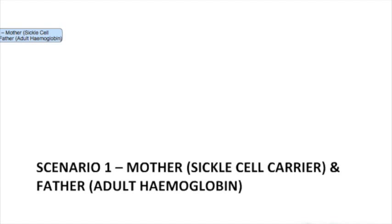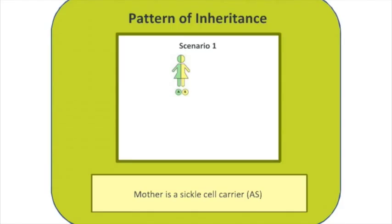In the first scenario, the mother is a carrier for the sickle cell gene and the father has normal adult haemoglobin. So we might depict it like this. The mother is a carrier of the sickle cell gene and her genotype is illustrated with the abbreviation A — she has one normal haemoglobin gene — and S, meaning she is carrying the sickle cell trait also. The father has normal adult haemoglobin so his genotype is expressed as AA.